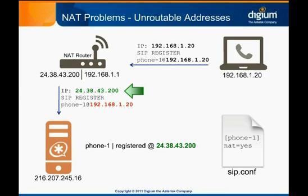When Asterisk routes a call to that IP address, the hotel's router should properly forward the message to the SIP phone. Most SIP-aware network devices use this exact same approach to prevent this problem. It is not recommended to set NAT equals yes in SIP.conf if you also have a network device configured to do the same thing, as this redundancy helps nothing and may present other issues.